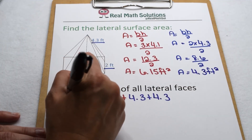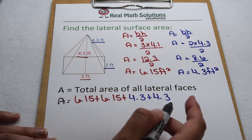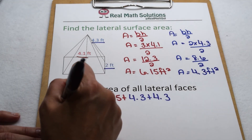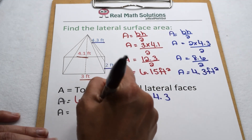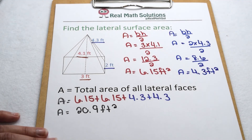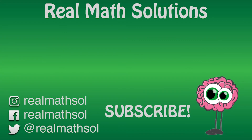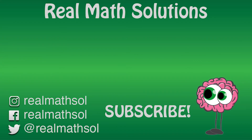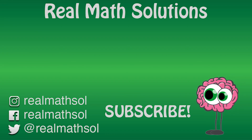Now to find what all four faces are worth, we simply add all these values together. That gives us a total lateral surface area of 20.9 square feet. We'll see you next time.